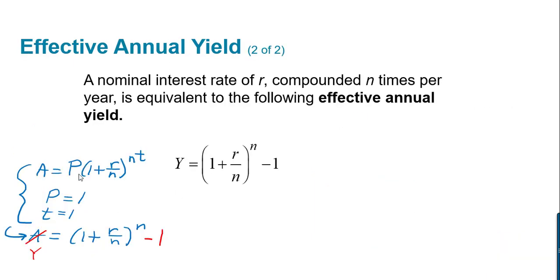So if you take the compound interest formula, A equals P times 1 plus R over N to the Nt, and you assume that you're investing just a single dollar for a single year, so P is 1 and T is 1, you're going to get A equals 1 plus R over N to the N, which would be one point something. If you subtract off the 1, you get what's called the effective annual yield, the interest rate that you're actually earning.